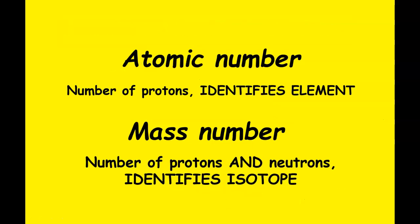You need to know the vocabulary words atomic number and mass number. The atomic number is the number of protons, which identifies the element. On your periodic table, you'll see a whole number which is the atomic number telling you which element it is. The mass number, also a whole number, is the number of protons and neutrons, and that identifies the isotope.